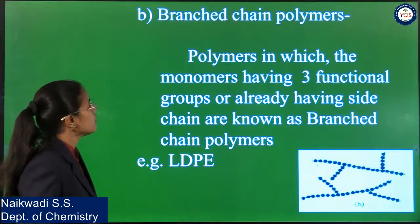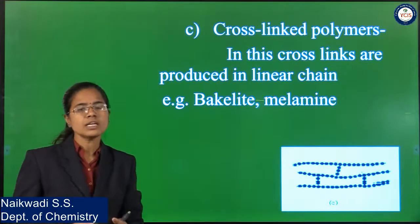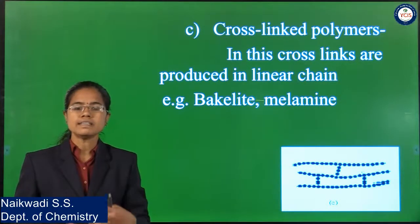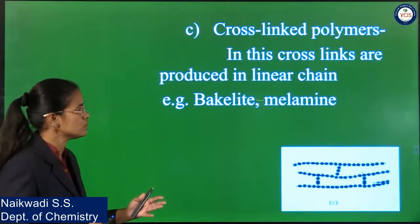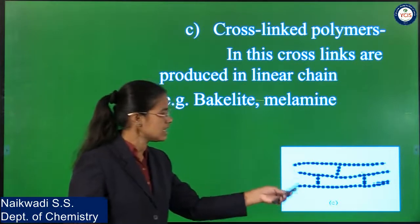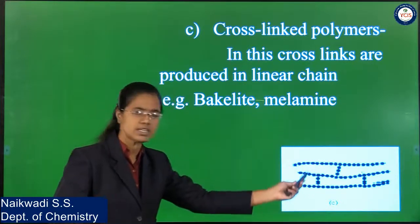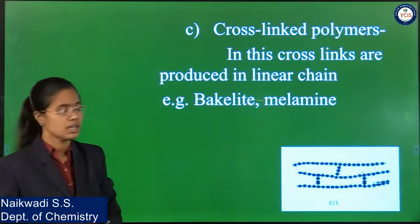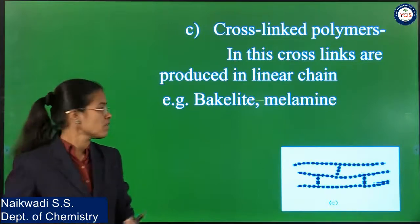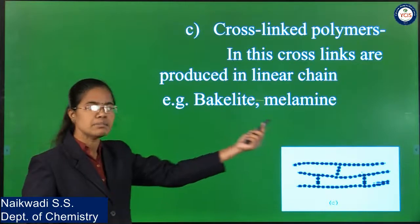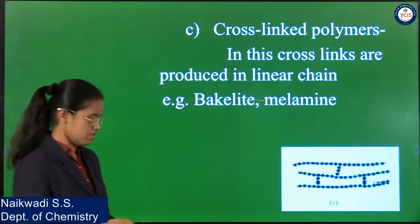The third subtype is cross-link polymers. Cross-link polymers come with a 3D arrangement or some cross-links, where cross-links are produced in a linear chain. As seen here, there are linear chains which are joined with each other through some cross-links — such polymers are known as cross-link polymers. For example, bakelite and melamine are examples of cross-link polymers.